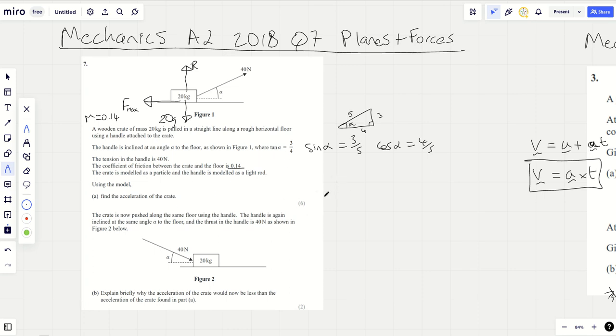Firstly, these questions always work the same way. You need to do uppies equal downies and the ups will equal the downs because it's not bouncing. So R plus, now you're going to have the component acting up from the 40, that's going to be 40 sine alpha.